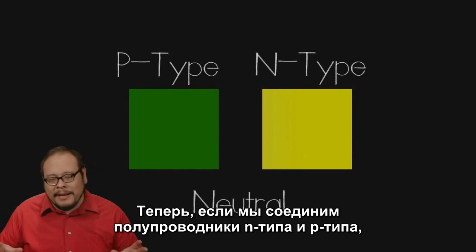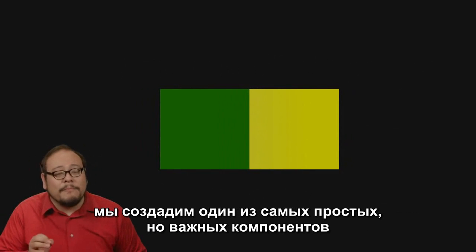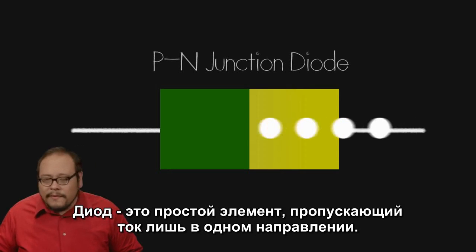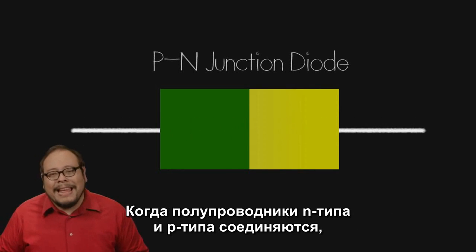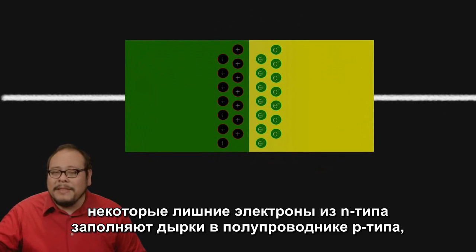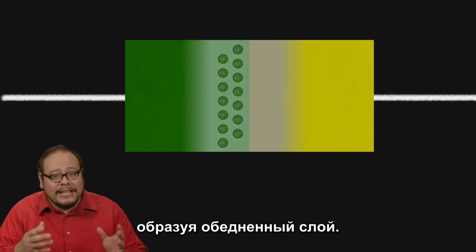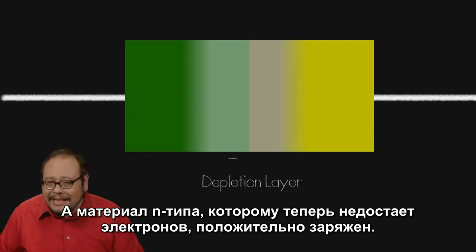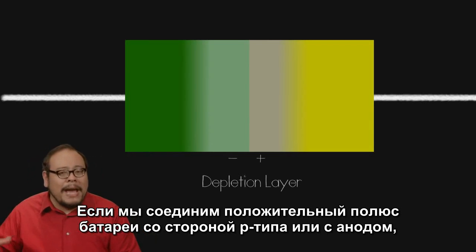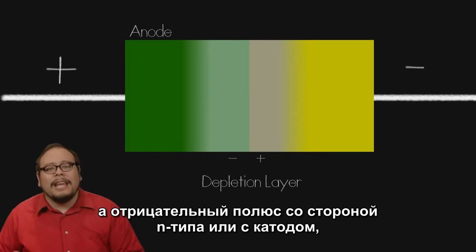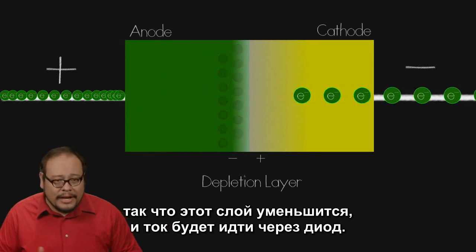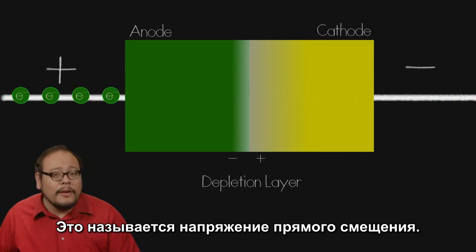When we put a P-type and N-type semiconductor together, we create one of the most basic but most important electronic components: a P-N junction diode. A diode is simply a device which allows current to flow in one direction but not the other. When the two come together, some of the extra electrons from the N-type move in to fill the holes of the P-type, creating a depletion layer. If we connect the positive terminal of a battery to the P-type side (anode) and the negative terminal to the N-type side (cathode), we draw electrons out of the holes in the depletion layer, causing the depletion layer to shrink and current to flow through the diode. This is called forward bias.